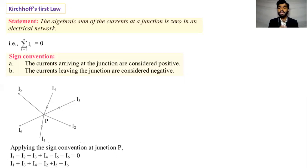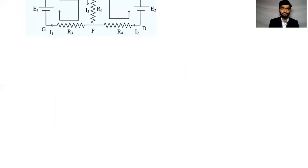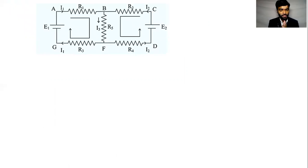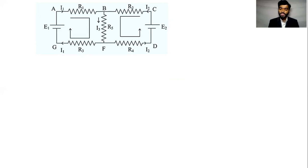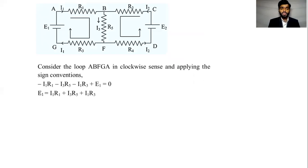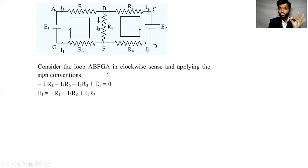But when you use the sign convention in an actual circuit diagram, this is the most important example. This is our circuit diagram and the sign convention will be applied to it. When we apply the sign convention, we will consider a loop — A, B, G, A — in the clockwise sense.